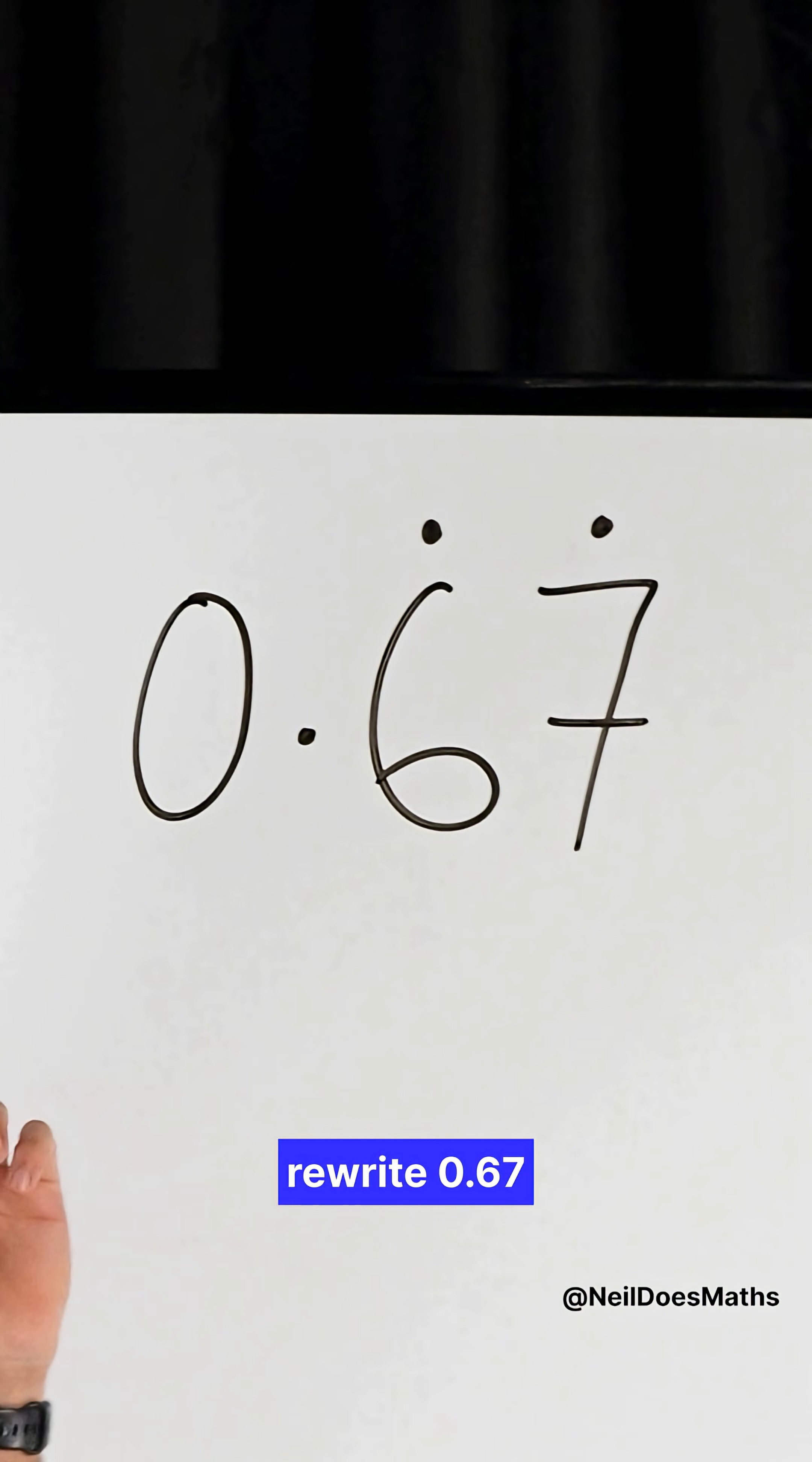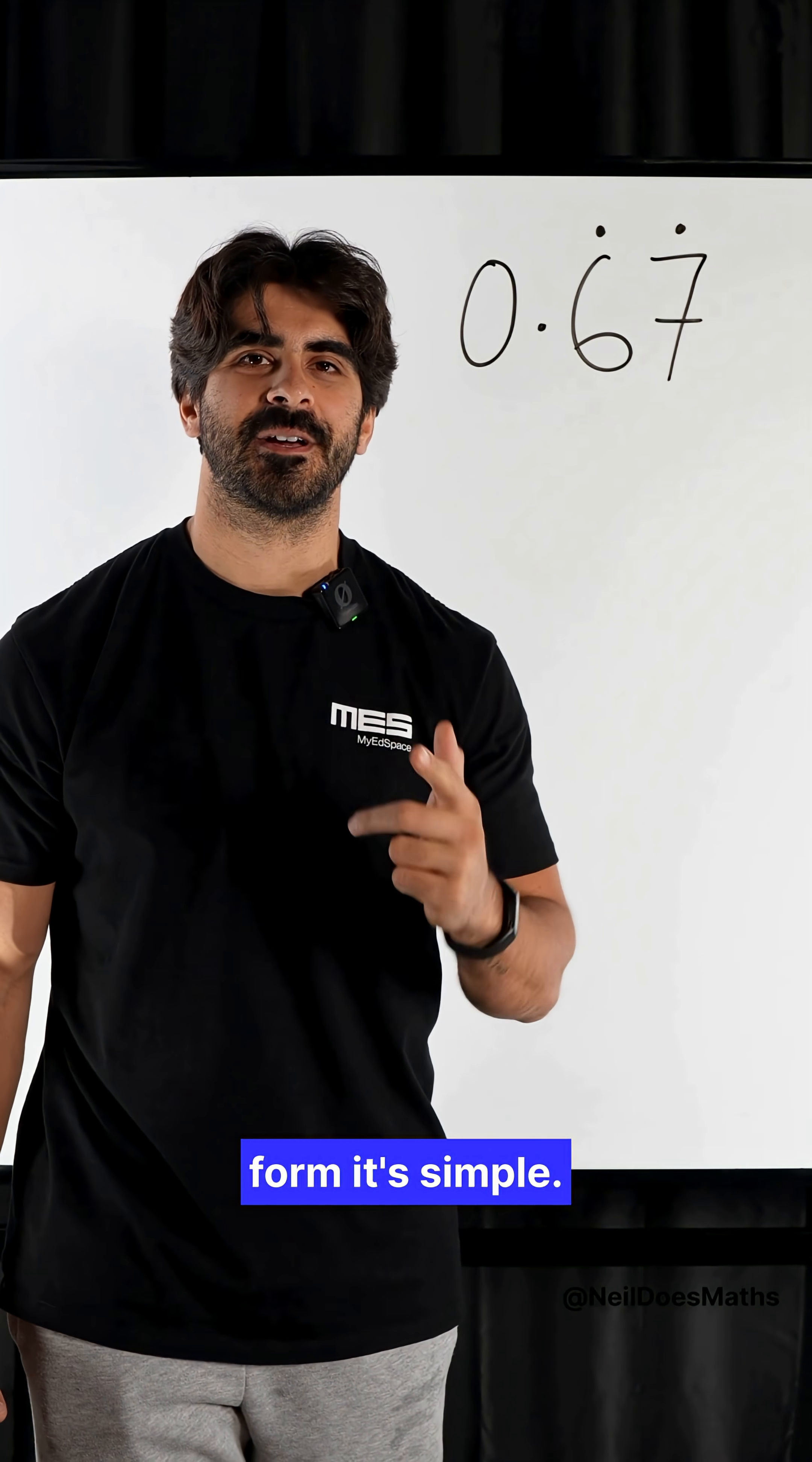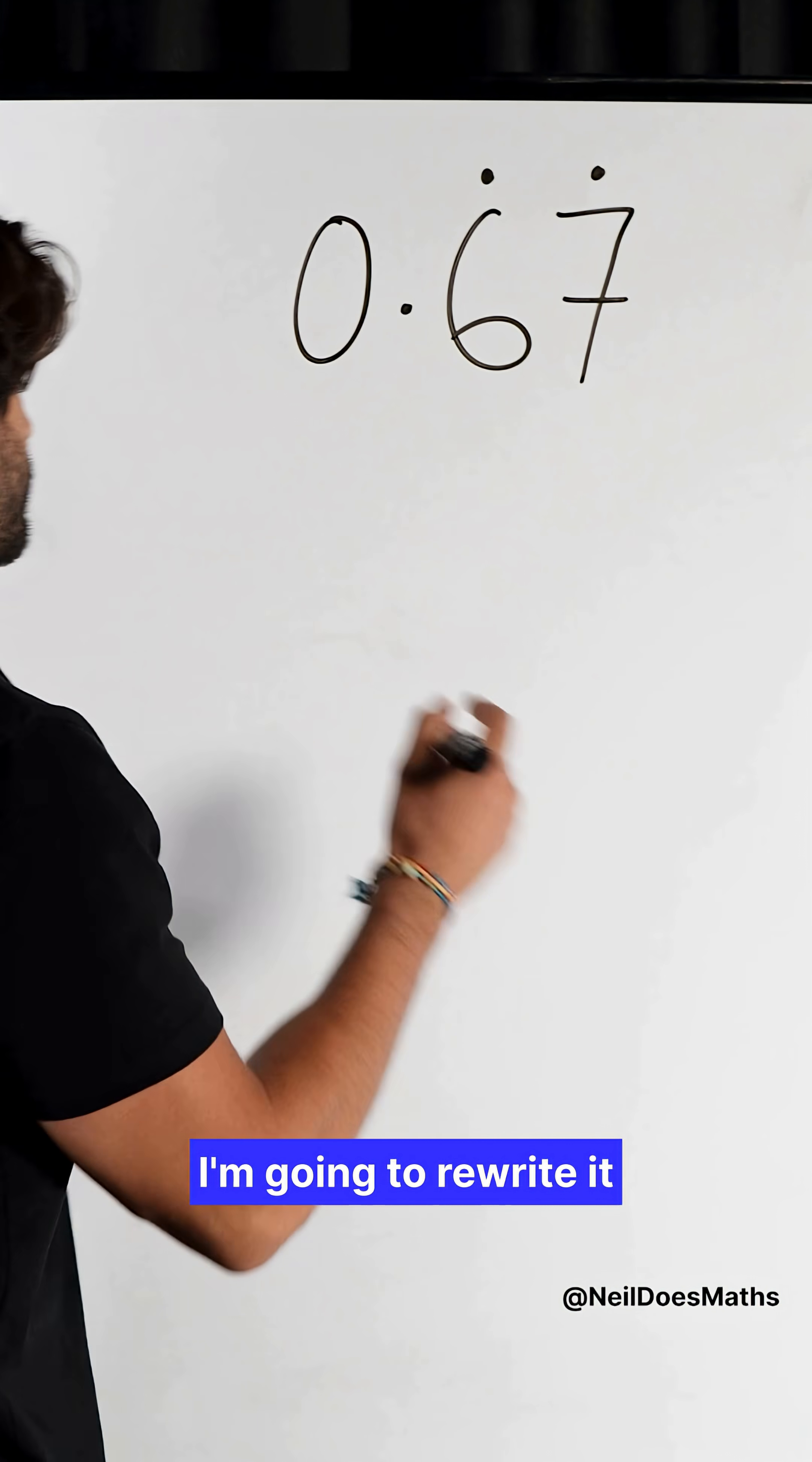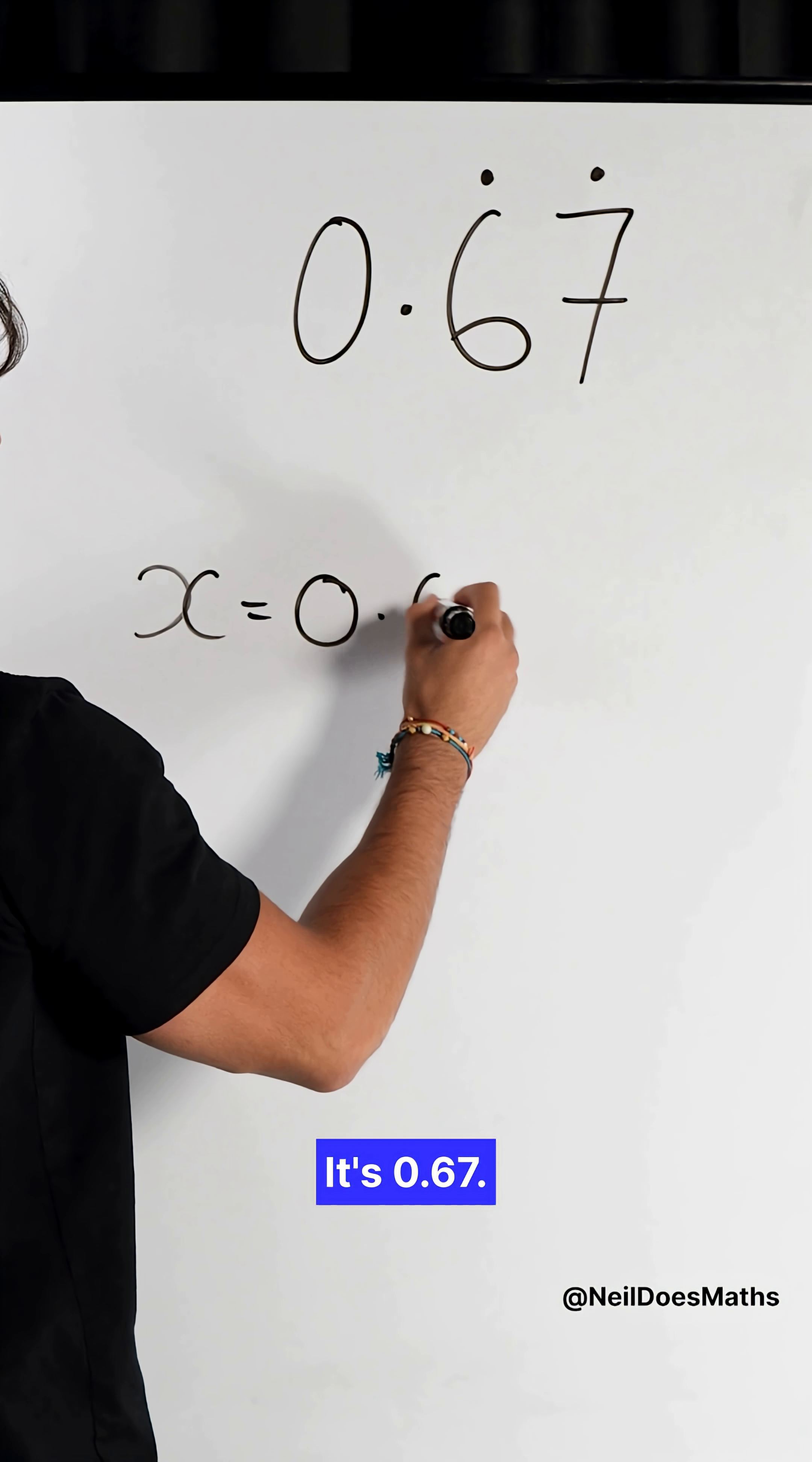Do you know how to rewrite 0.67 recurring as a fraction in its simplest form? It's simple. First, let's rewrite more of the number. I'm going to rewrite it as the letter X. It's 0.67.